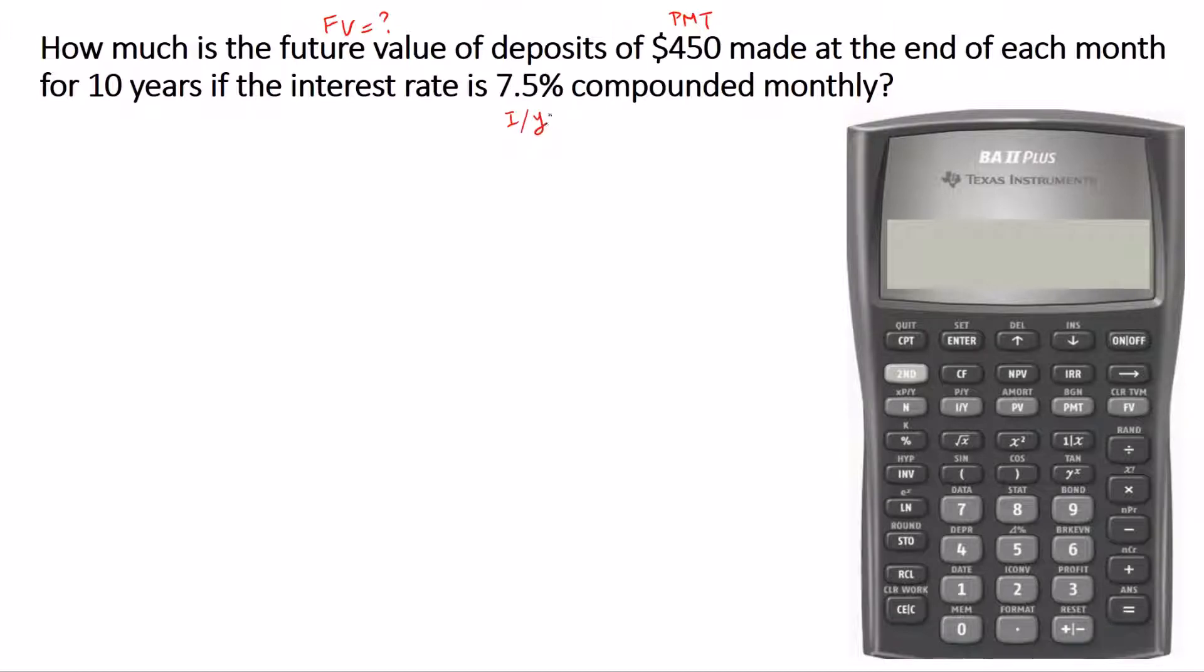First off, how do we know if it's a simple annuity or a general annuity? Here, when it says the payments are made at the end of each payment period, which is monthly payments, this end makes it ordinary. Second, the number of payments per year is 12 because the payments are monthly, and interest is compounded monthly. So number of payments per year or P/Y is 12, number of compounding periods per year or C/Y is 12. These two numbers match, and therefore it is a simple annuity.